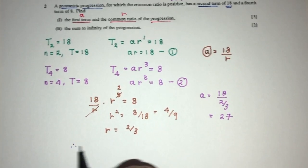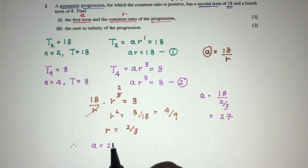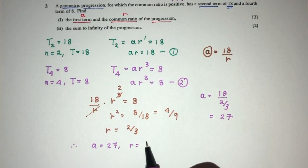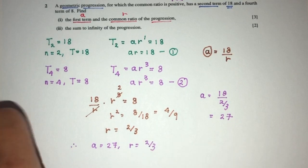So, here we conclude part 1. a is equal to 27. And r is equal to 2 over 3. For part 1.